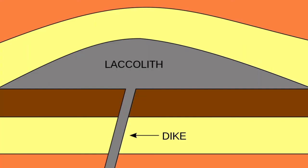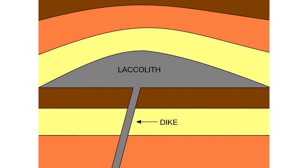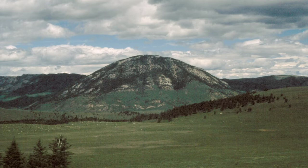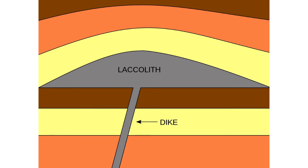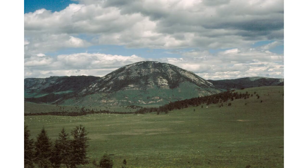Today we will discuss four important terms: laccolith, lopolith, phacolith, and batholith. As you can see in the picture, laccolith is a dome-shaped structure. All these features are fed by lava through a pipe-like conduit. The lava comes from the asthenosphere, then from the batholith, and from the batholith all these features are created.